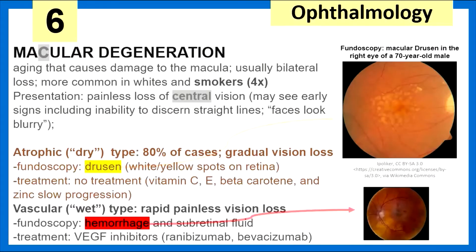Macular degeneration — there's painless loss of central vision. This condition is due to aging, causes damage to the macula, is usually bilateral, and is more common in whites and smokers, who have four times the risk. Patients present with loss of central vision and inability to discern straight lines and edges — for example, faces may look blurry. There are two types: the atrophic dry type, which is more common but has no treatment; and the vascular wet type, involving rapid painless vision loss, which does have treatments — VEGF inhibitors such as ranibizumab and bevacizumab.